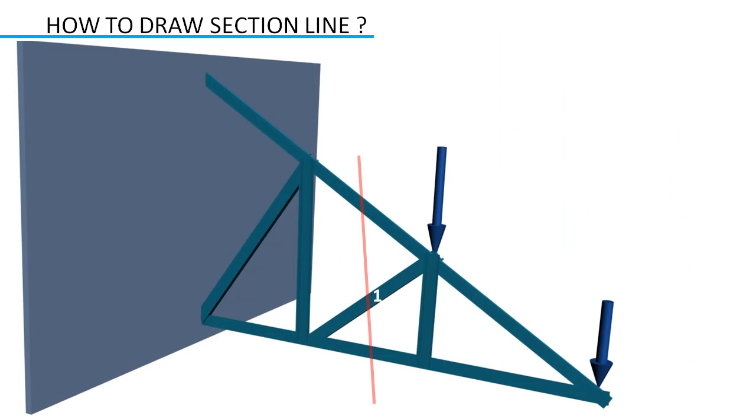In this cantilever example, for determining force in member one, draw the section line like this. Now to find out internal unknown forces, you can separate out sections.